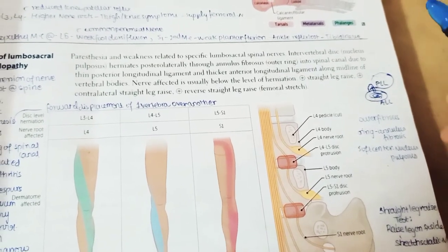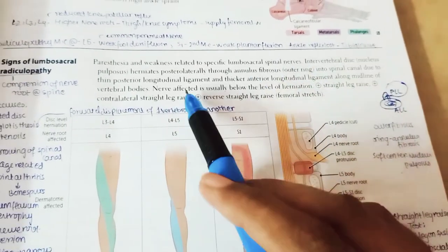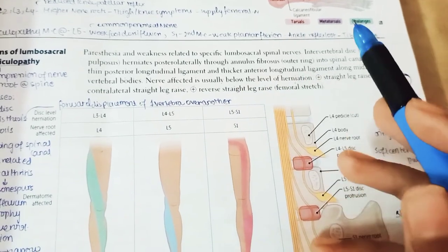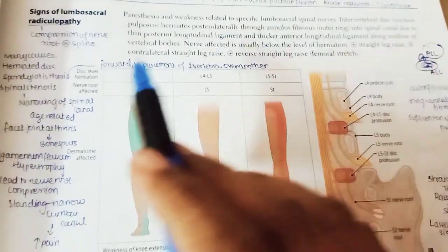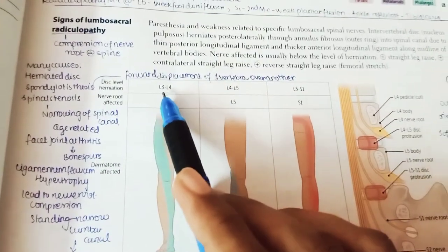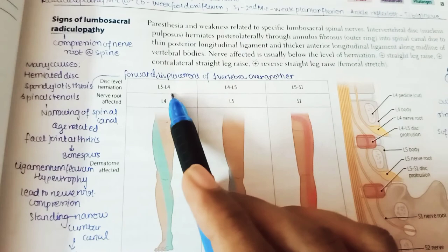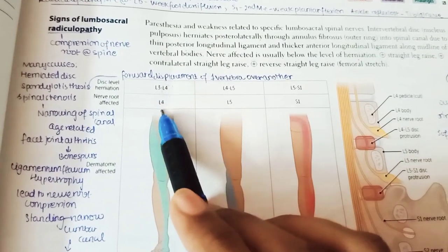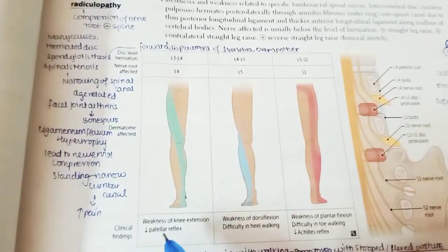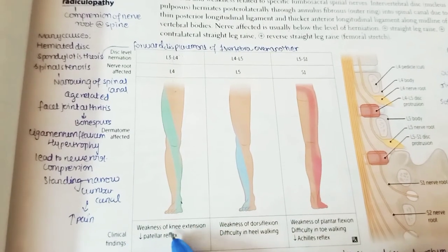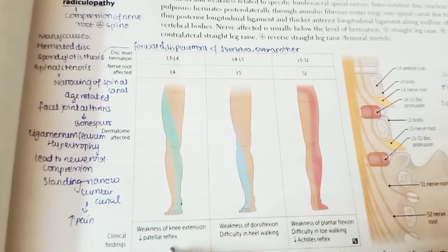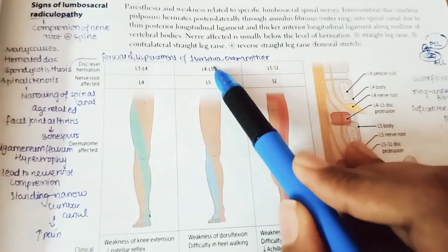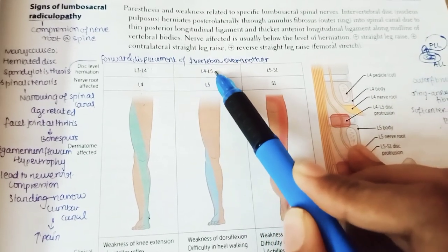As the nucleus pulposus moves posteriorly, there is a chance of nerve compression. The nerve affected is usually below the level of herniation. For example, herniation at L3–L4 affects the L4 nerve, causing weakness of knee extension and loss of patellar reflex.